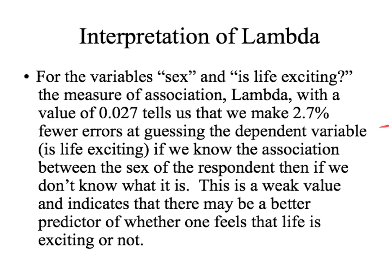To interpret this result: for the variable sex and is life exciting, the measure of association lambda, with a value of .027, tells us that we make 2.7% fewer errors at guessing the dependent variable — is life exciting — if we know the sex of the respondent than if we don't. This is a weak value and indicates there may be a better predictor of whether one feels life is exciting. The key pieces are stating lambda's value, the percent improvement in guessing, restating both variables, and indicating whether it's a strong or weak relationship.